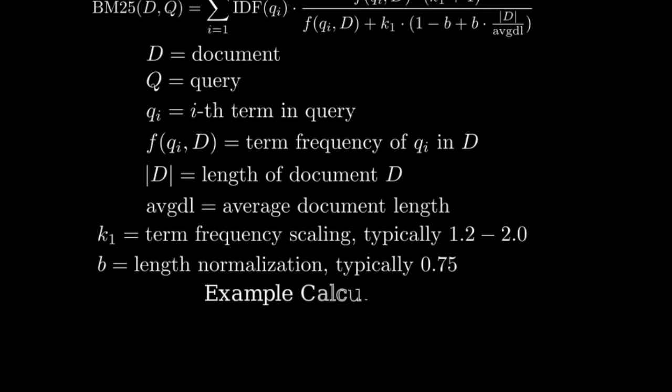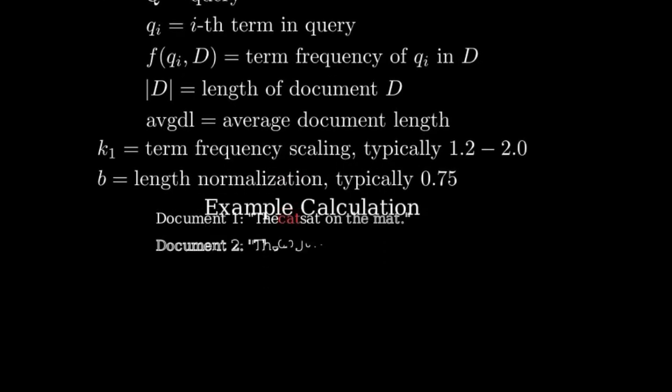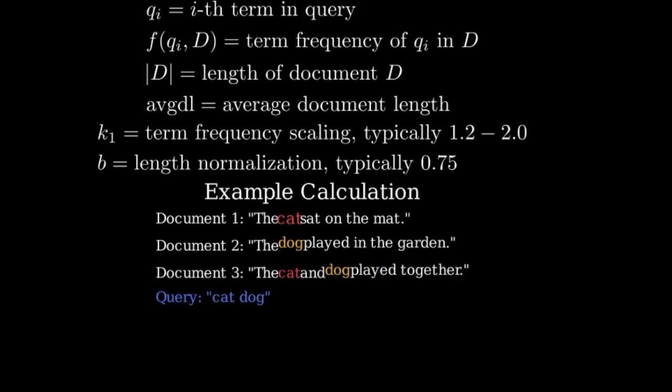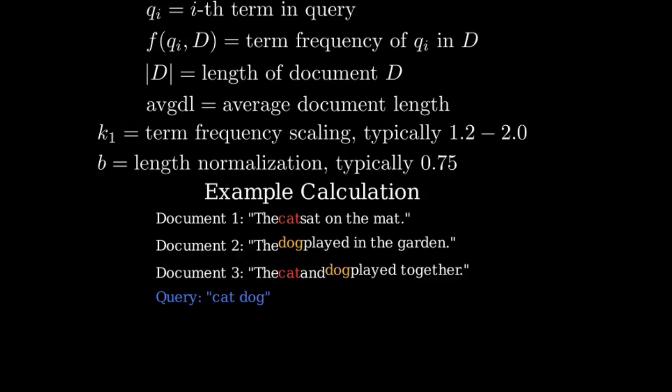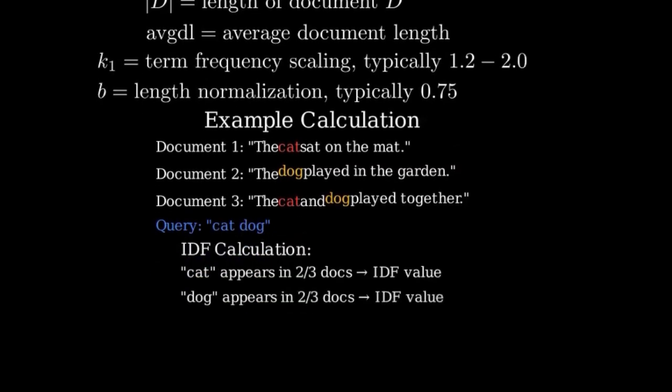Let's walk through a simplified example to understand how BM25 works in practice. Imagine we have a small collection of three documents. Document 1: "The cat sat on the mat." Document 2: "The dog played in the garden." Document 3: "The cat and dog played together." And our search query is "cat dog." Let's calculate the BM25 score for Document 3 with respect to this query.